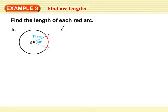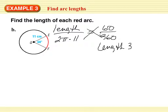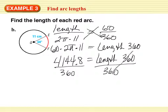Another example: length over circumference, which is 2 pi times 11, equals degrees over 360. Cross multiply: length times 360 equals 60 times 2 pi times 11. Divide both sides by 360, and your arc length equals 11.5 centimeters.